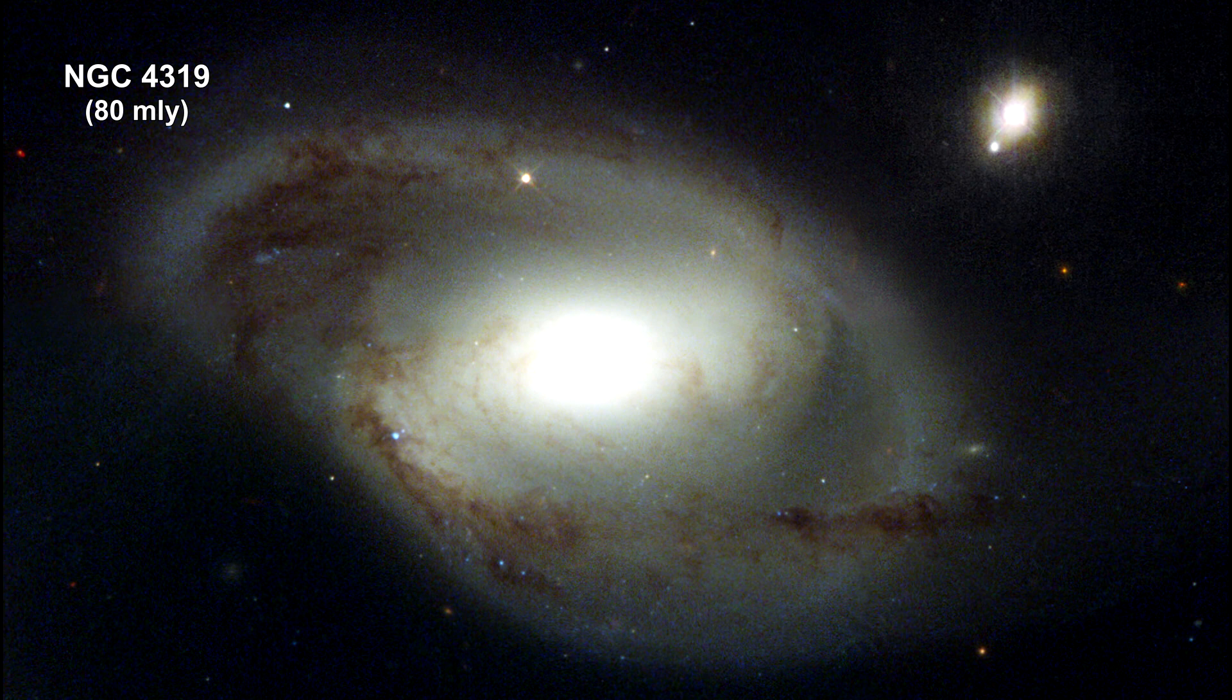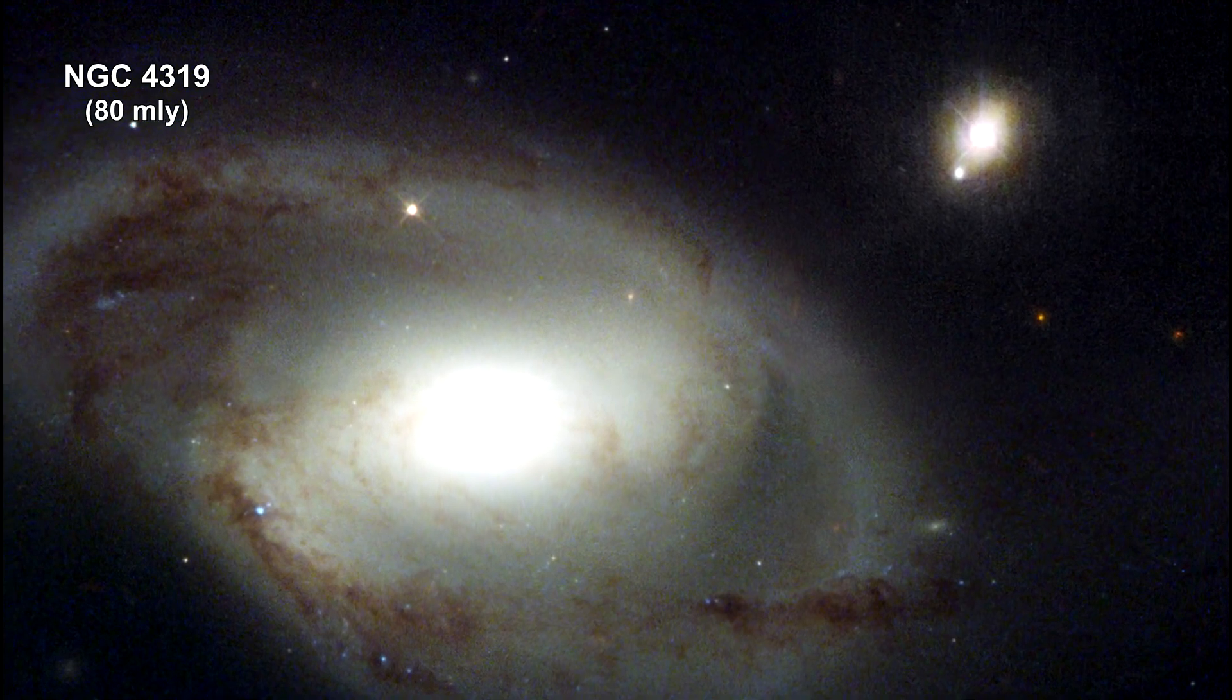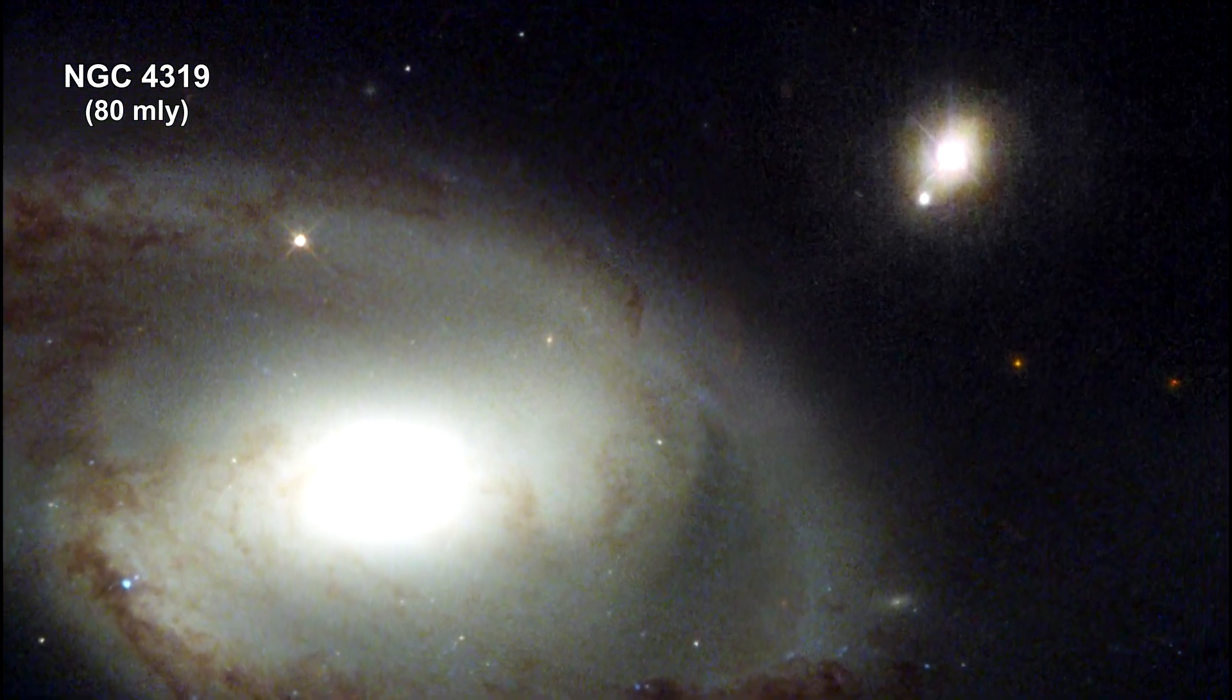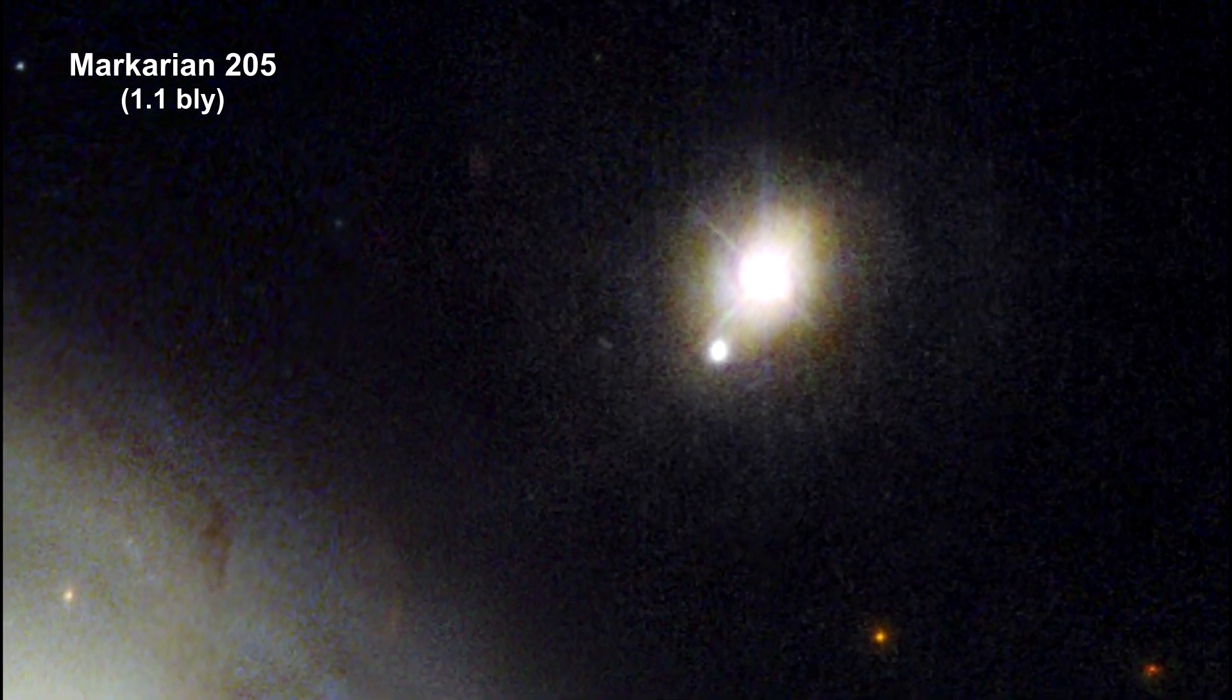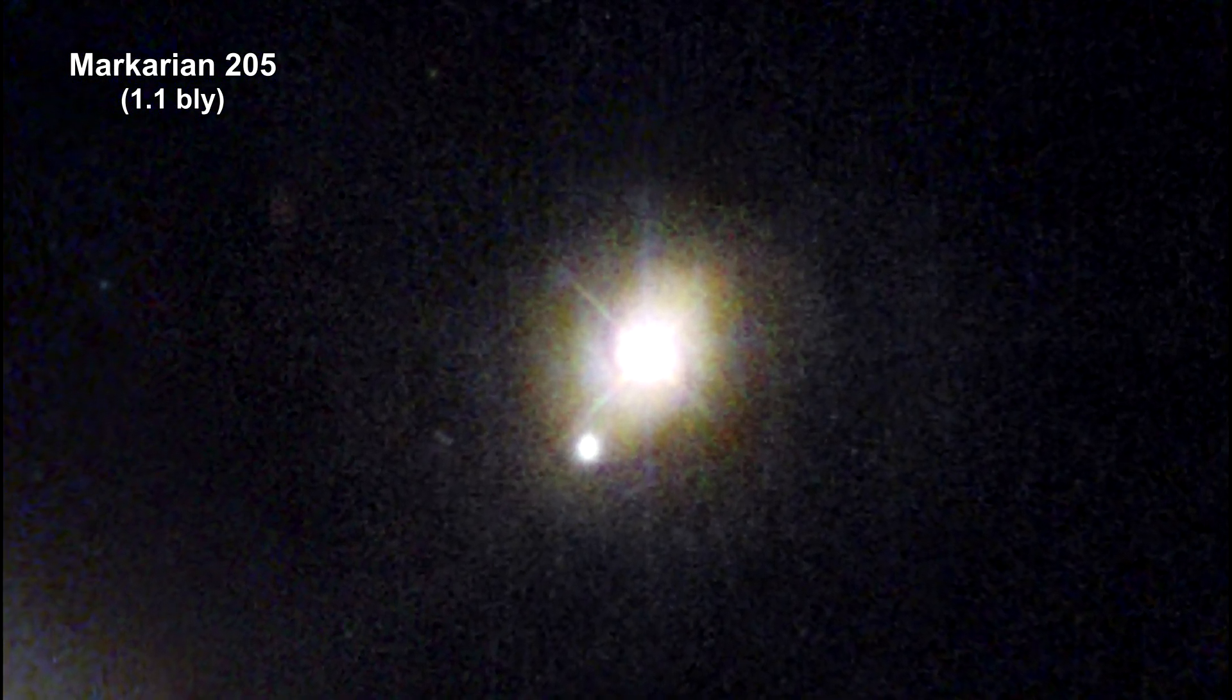You might recognize NGC 4319. It is a galaxy in the Virgo supercluster. Of interest now is the small light at the upper right. It is the quasar called Markarian 205. It is 1.1 billion light-years away. Markarian is a relatively nearby quasar. Many quasars reside much further away.